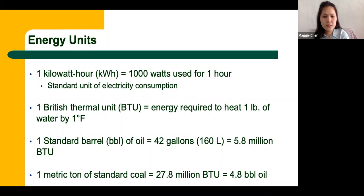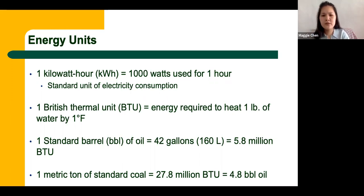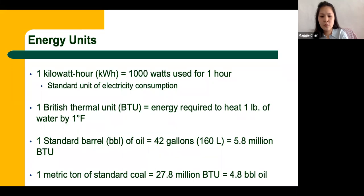One British thermal unit, one BTU, is the energy required to heat one pound of water by one degree Fahrenheit. Around one pound of water is 16 ounces — a little bit bigger than a plastic water bottle. One standard barrel of oil (BBL) is 40 gallons or 160 liters, equal to 5.8 million BTUs. And one metric ton of standard coal is around 27.8 million BTUs, which is around 4.8 BBL of oil.